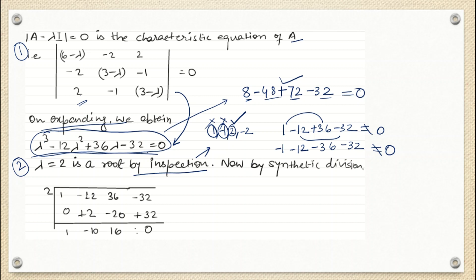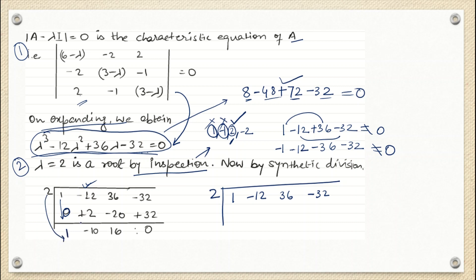In synthetic division, we write this root (2) here and write down the coefficients of each term of the given equation: coefficient of lambda cubed is 1, lambda squared is -12, lambda is 36, and constant is -32. We drop down the 1, then 2 times 1 gives +2; -12 plus 2 gives -10; 2 times -10 gives -20; 36 plus -20 gives 16; 2 times 16 gives +32; and -32 plus 32 gives zero — remainder is zero.